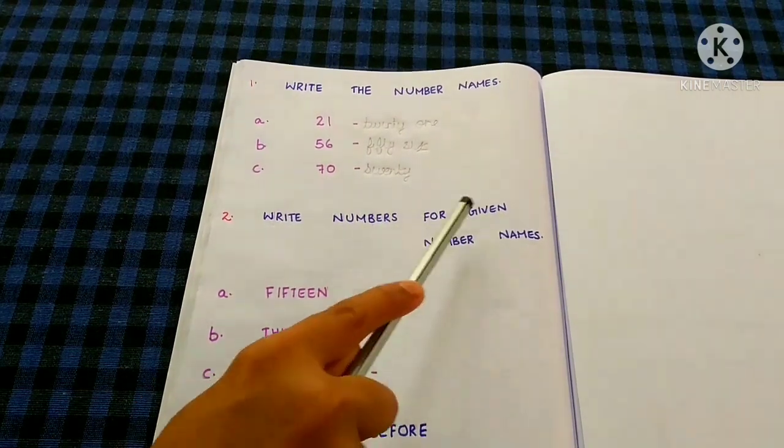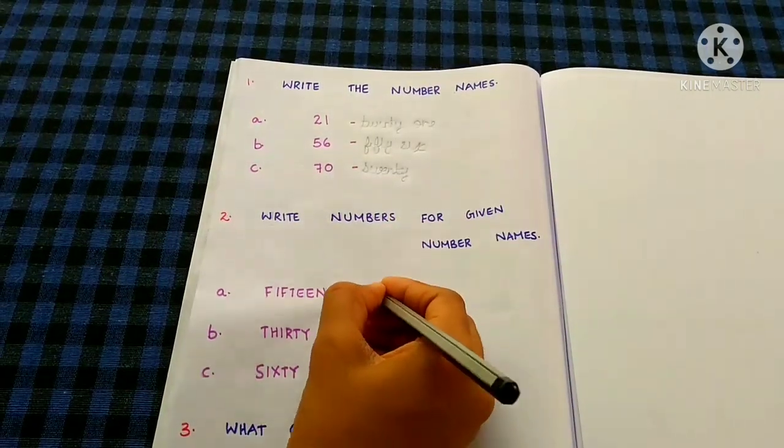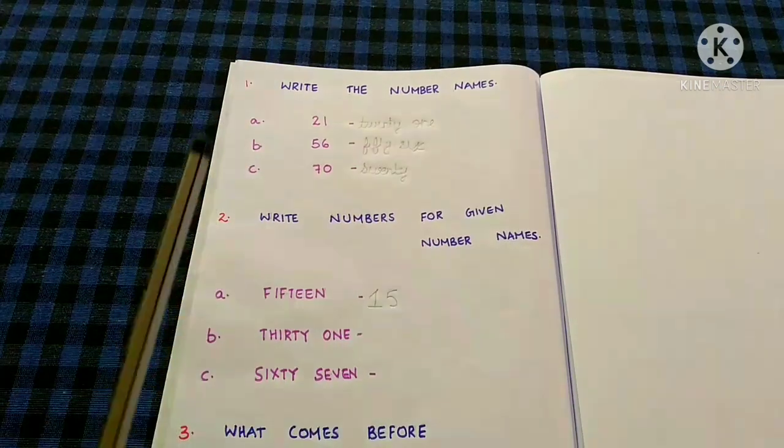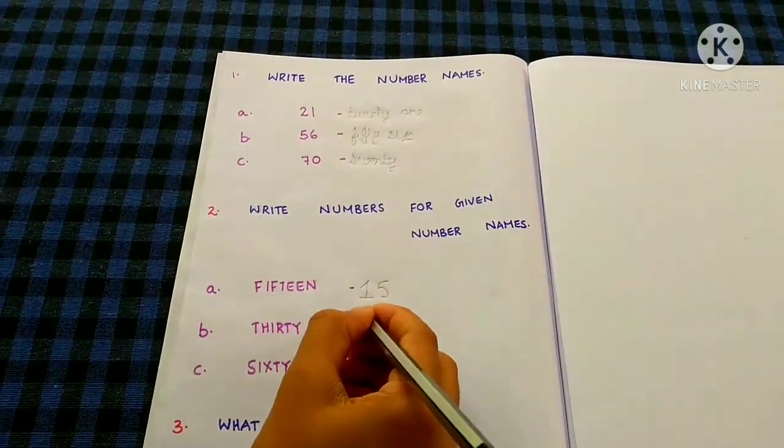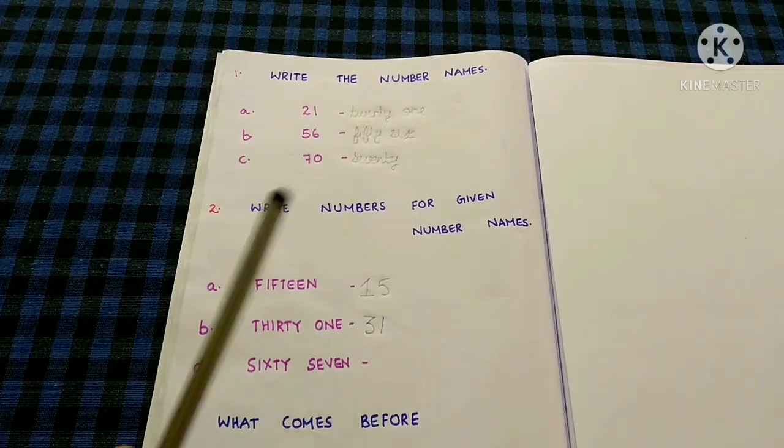Write numbers for given number names. 15, 31, 67.